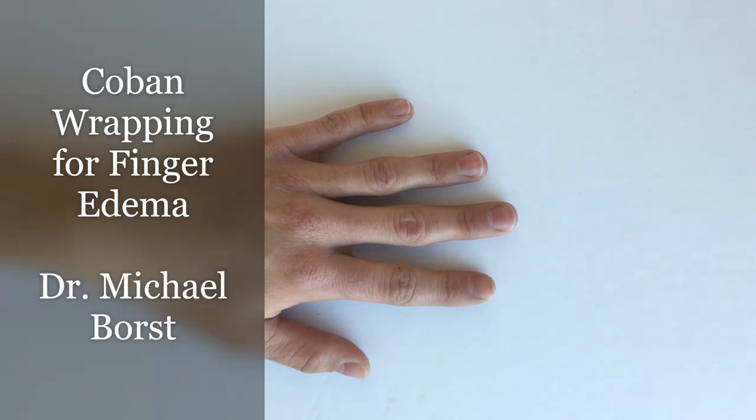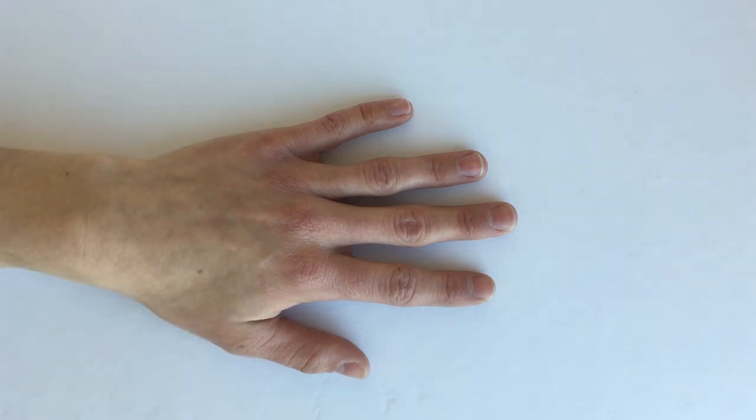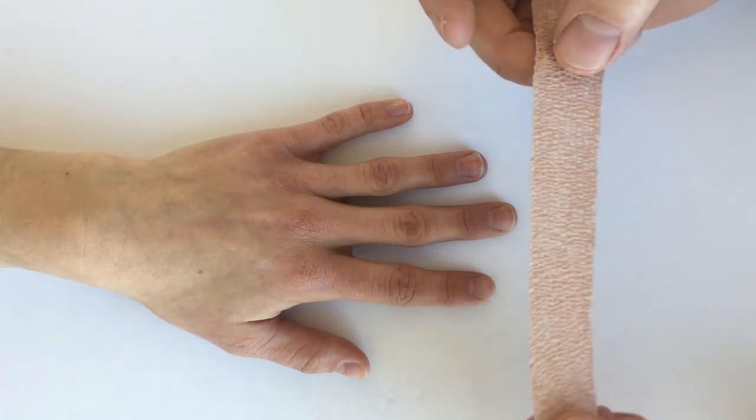In this video we're going to talk about compression techniques for edema intervention. The first technique we're going to demonstrate is the use of a Coban wrap for an edematous finger.